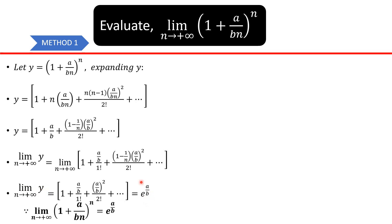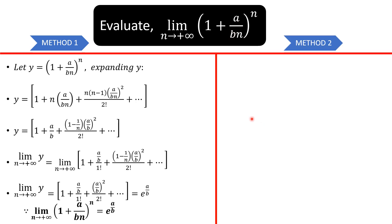The limit as n tends to infinity of y is basically just e raised to the power a over b. So the limit as n tends to infinity of (1 plus a over bn) raised to the power n is e raised to the power a over b.